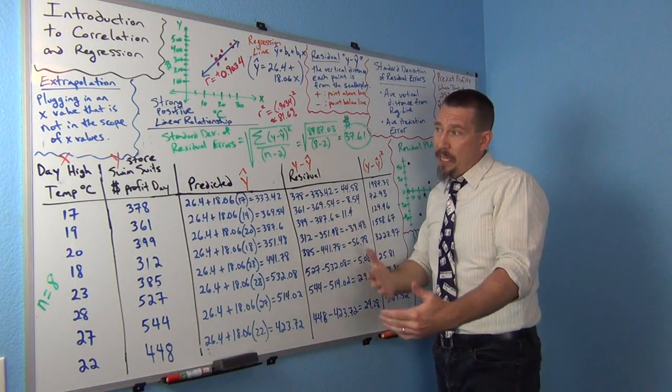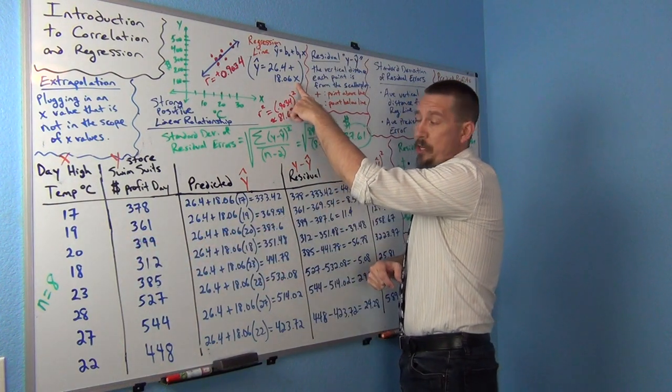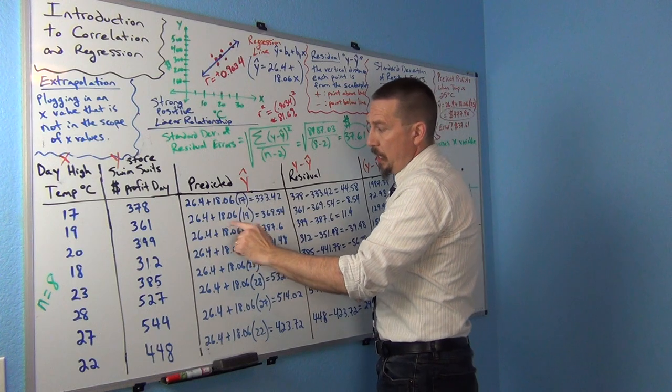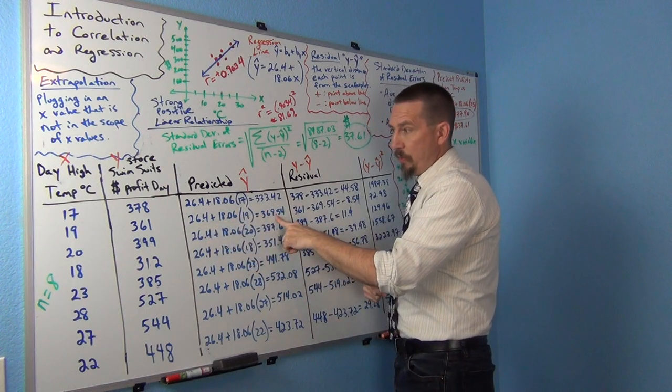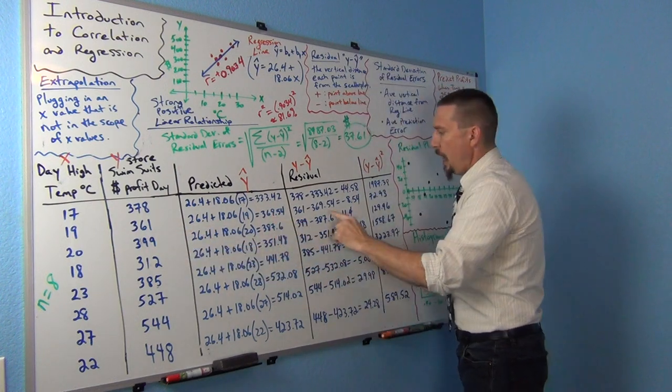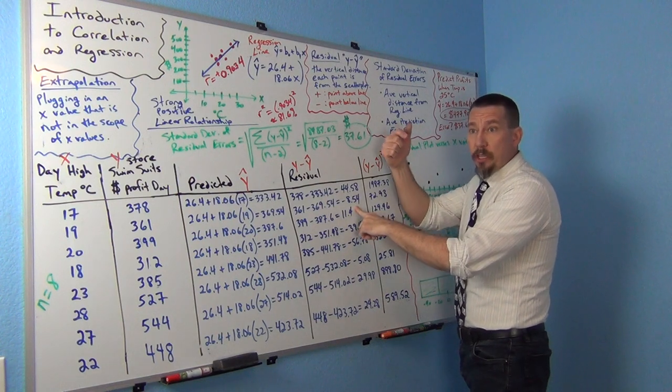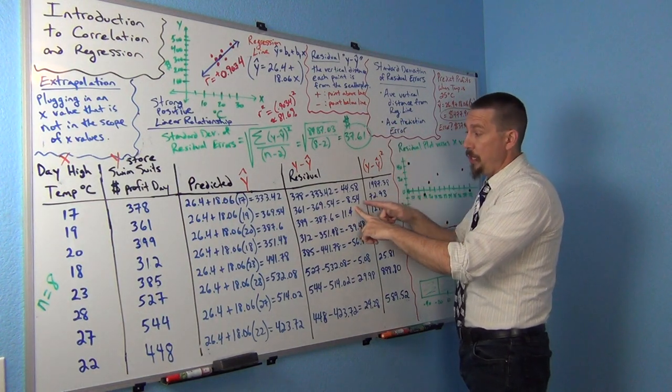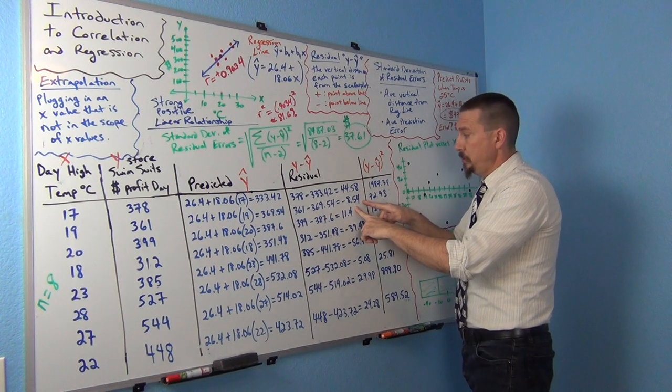Now we're going to do this for all the X values. So the next X value is 19. I'm plugging that in for X in the regression line formula. I multiply this out, and then add the 26.4. I get 369.54. If I subtract these two, I get negative 8.54. And the negative residual tells you that the point is below the line. So that point was actually 8.54 below the line.